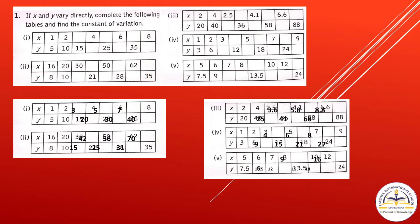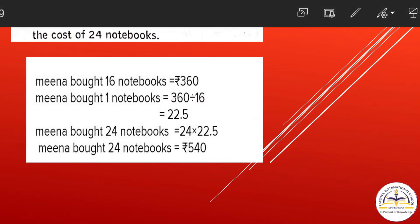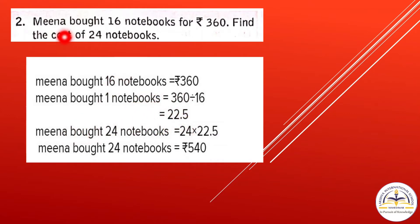Question 2: Mina bought 16 notebooks for rupees 360. Find the cost of 24 notebooks. First we find the cost of one notebook: 360 divided by 16 equals 22.5 rupees. Now to find the cost of 24 notebooks, we multiply 24 by 22.5, which gives rupees 540.